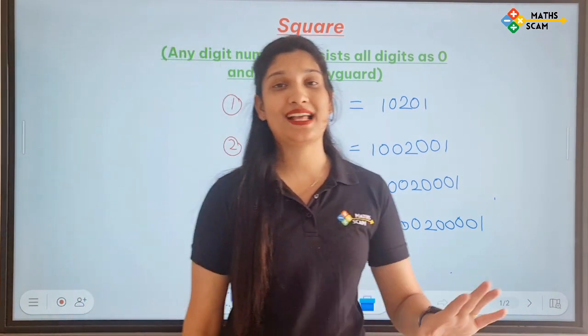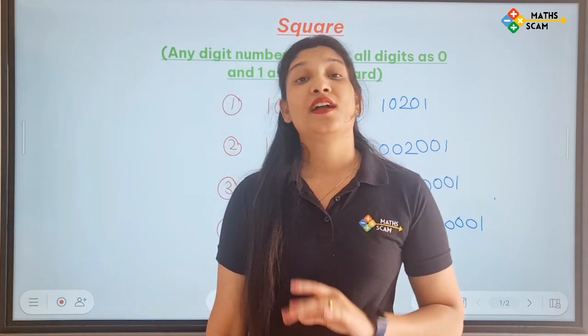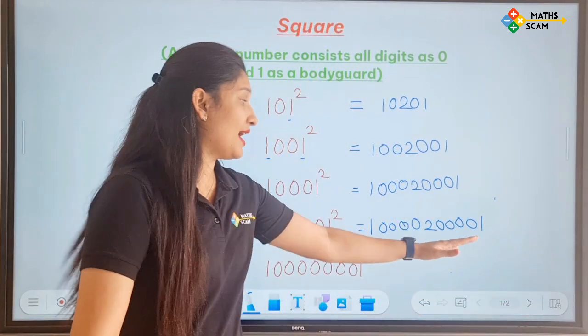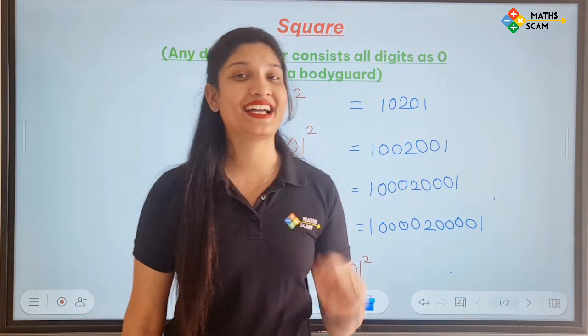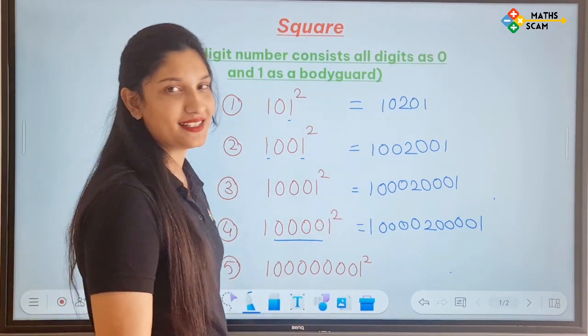So you can tell the answers directly now. 1 4 0 2 4 0 1. You might not be able to read that number but you can tell the answers. That's the power of basic math and that's the power of math.